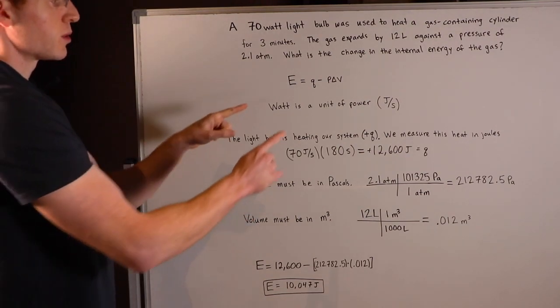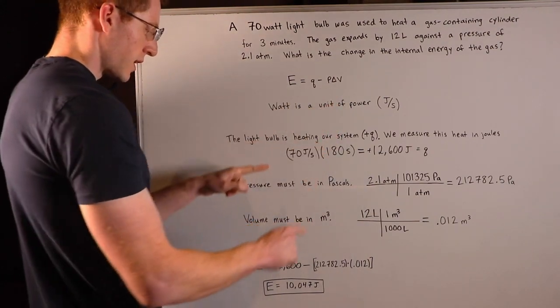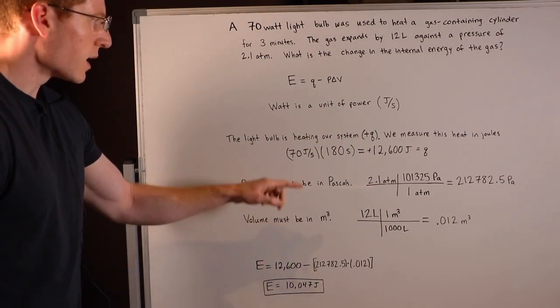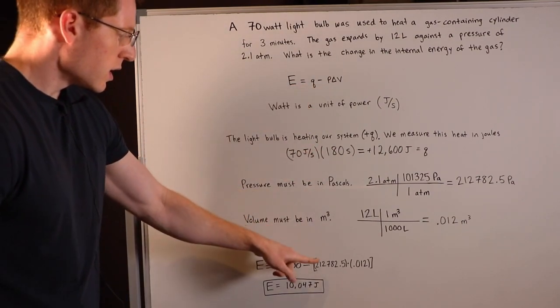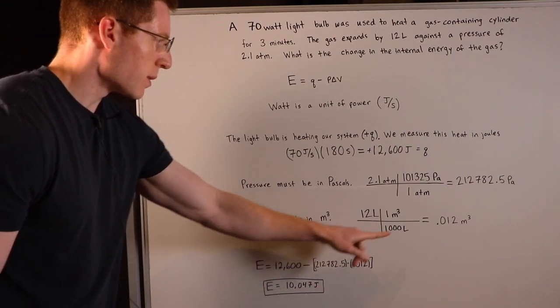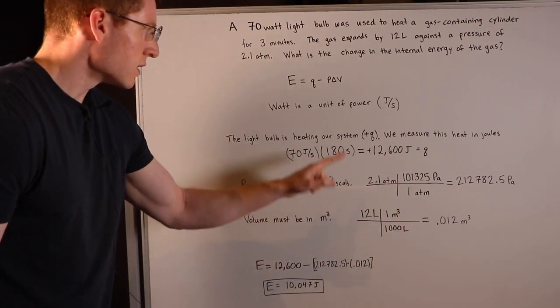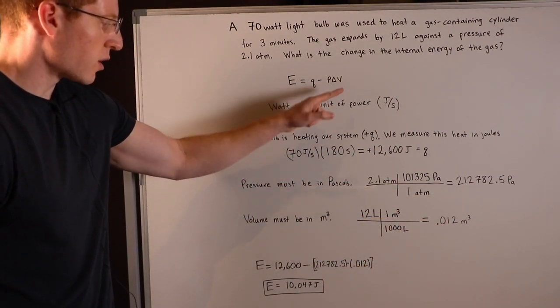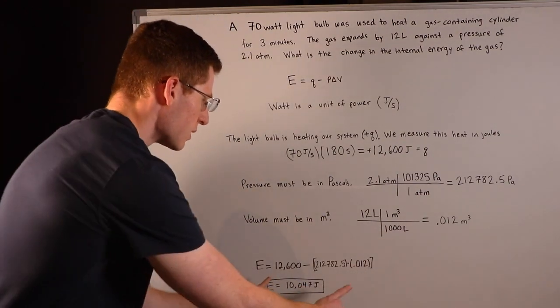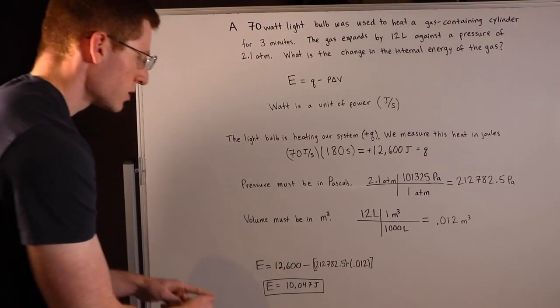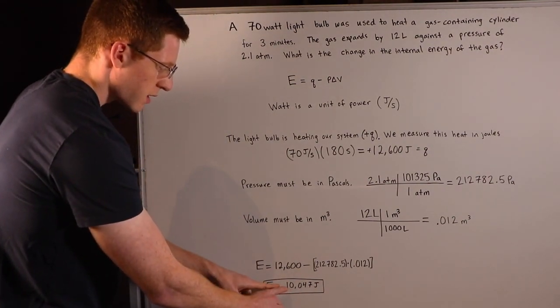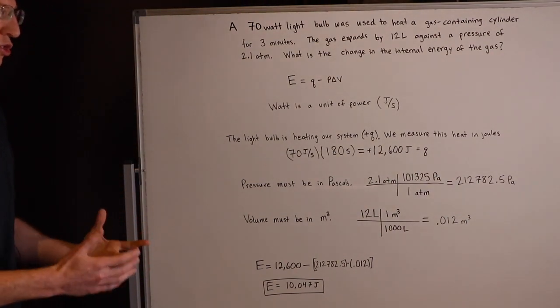Now I have everything I need to plug into this equation here. So my Q I found to be positive 12,600, and my P was 212,782.5. That was my pressure in Pascals. And my delta volume or change in volume was 0.012 cubic meters. And if you plug all this into a calculator, you'll get your final change in internal energy to be positive 10,047 joules.